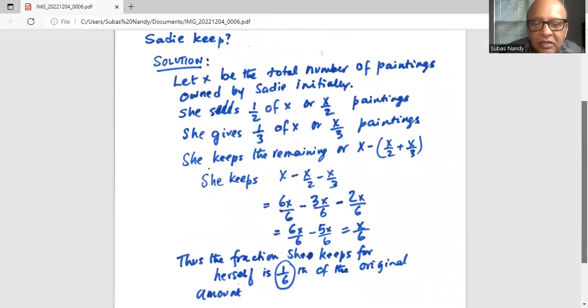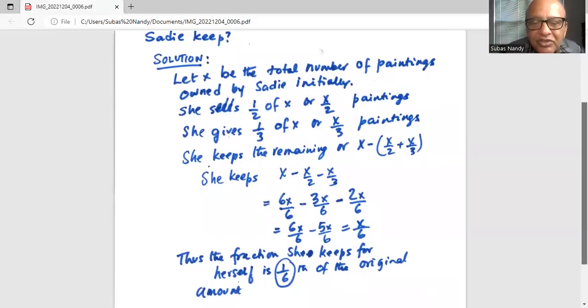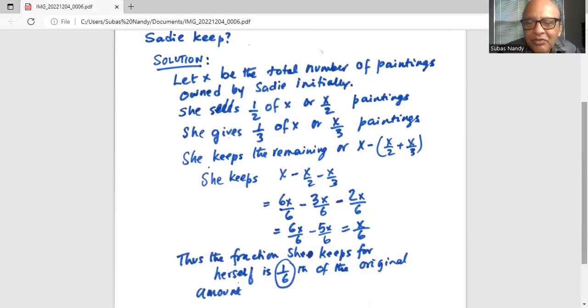Thus, the fraction Sadie keeps for herself is one sixth of the original amount, because she originally started with X and now she's left with X over 6. So she keeps one sixth of the original amount.